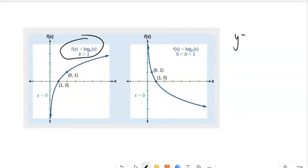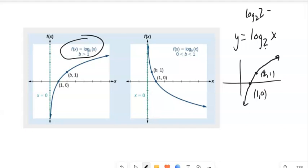If I graphed y equals log base 2 of x, my b is 2. I know it's going to go through (1,0), and then I know it's also going to go through the point (2,1). That happens because log base 2 of 2 is 1. This is asking 2 to what power gives you 2? 2 to the first power gives you 2.